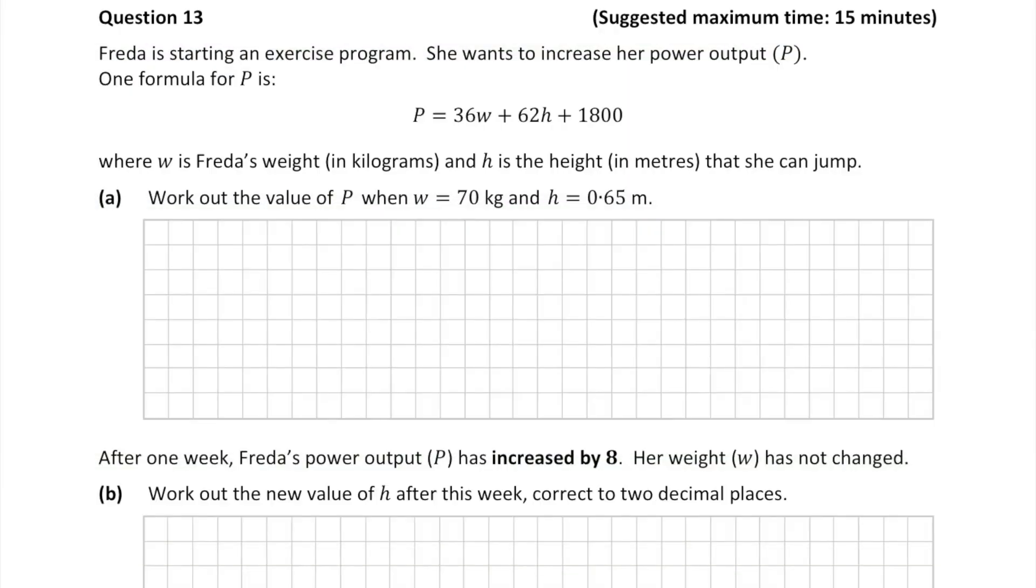Here's today's question, which is worth 25 marks. We're given a formula for Frida's power output, where w is her weight and h is the height she can jump in meters.